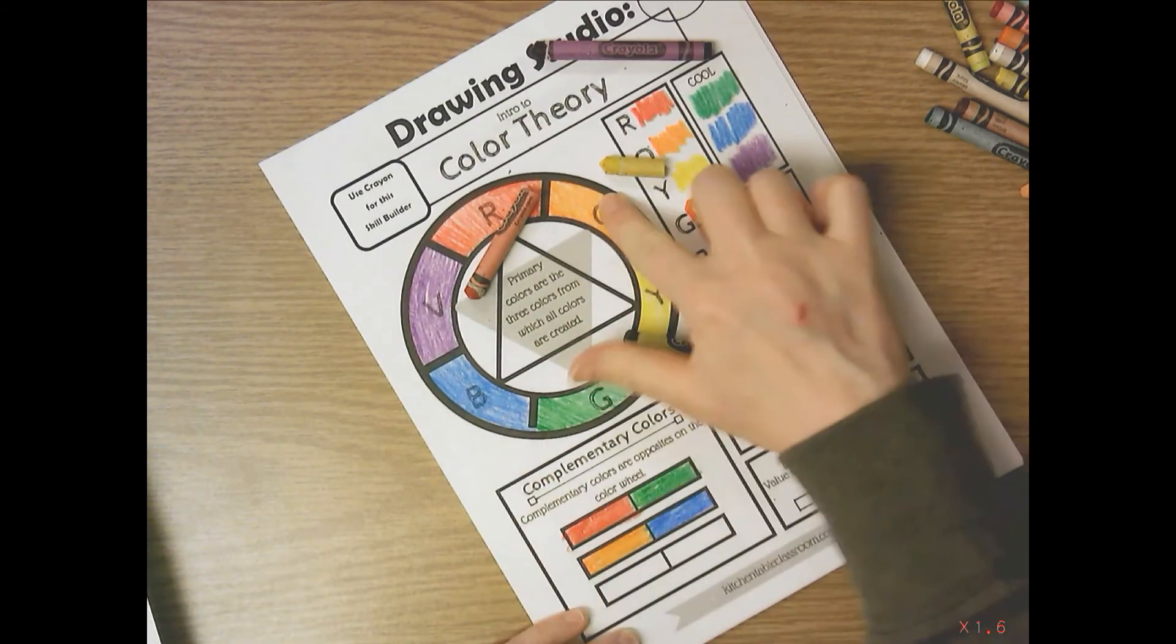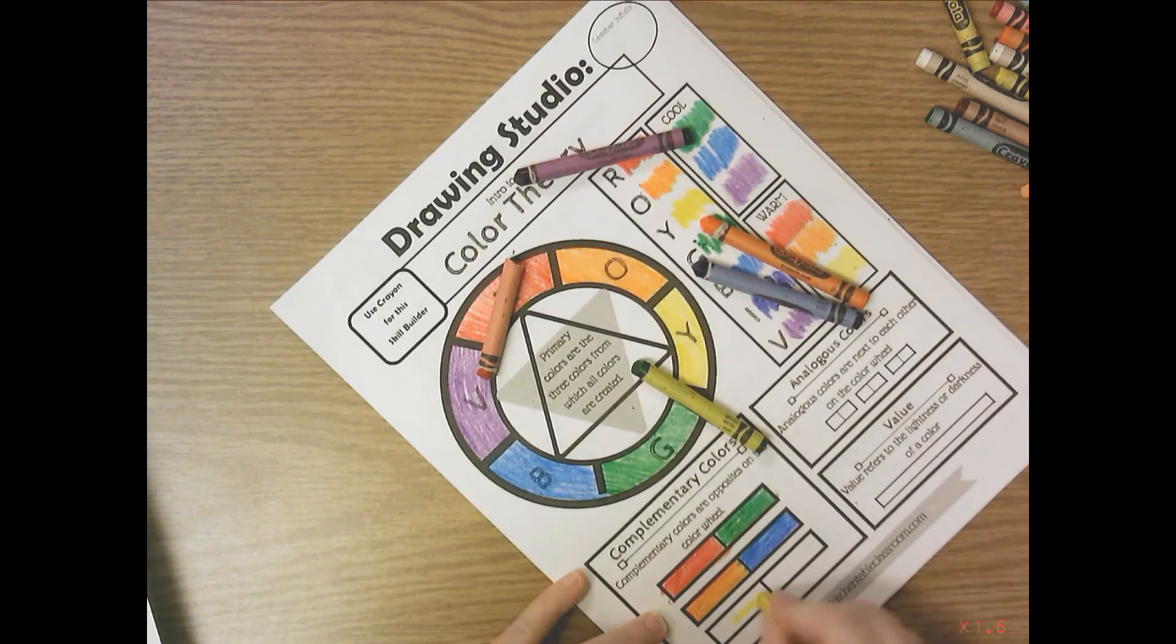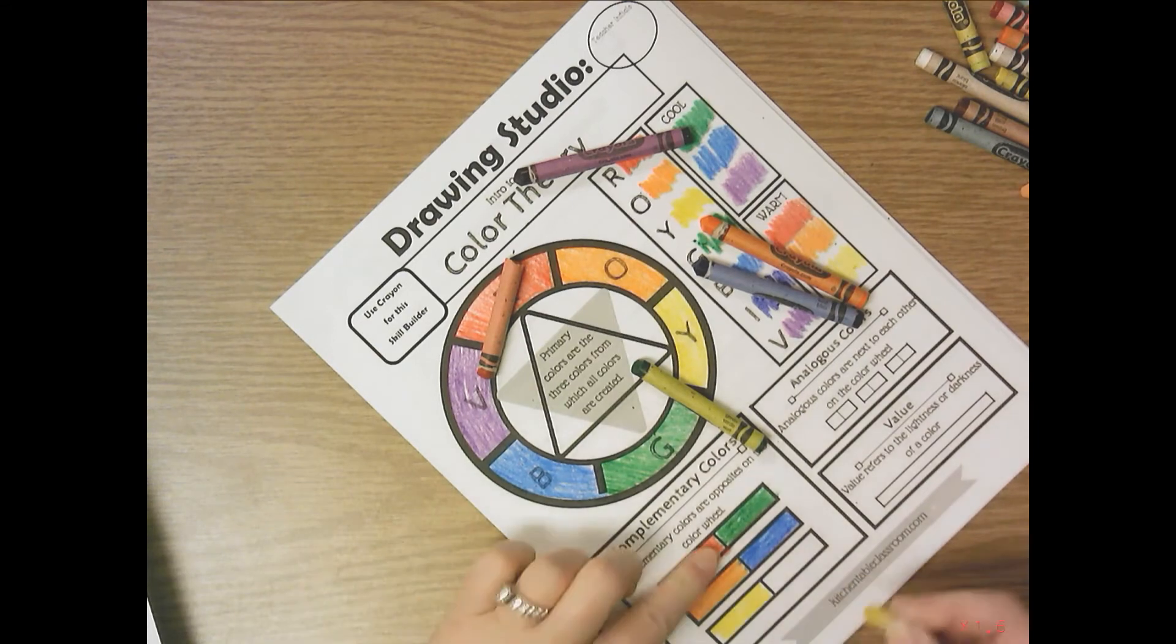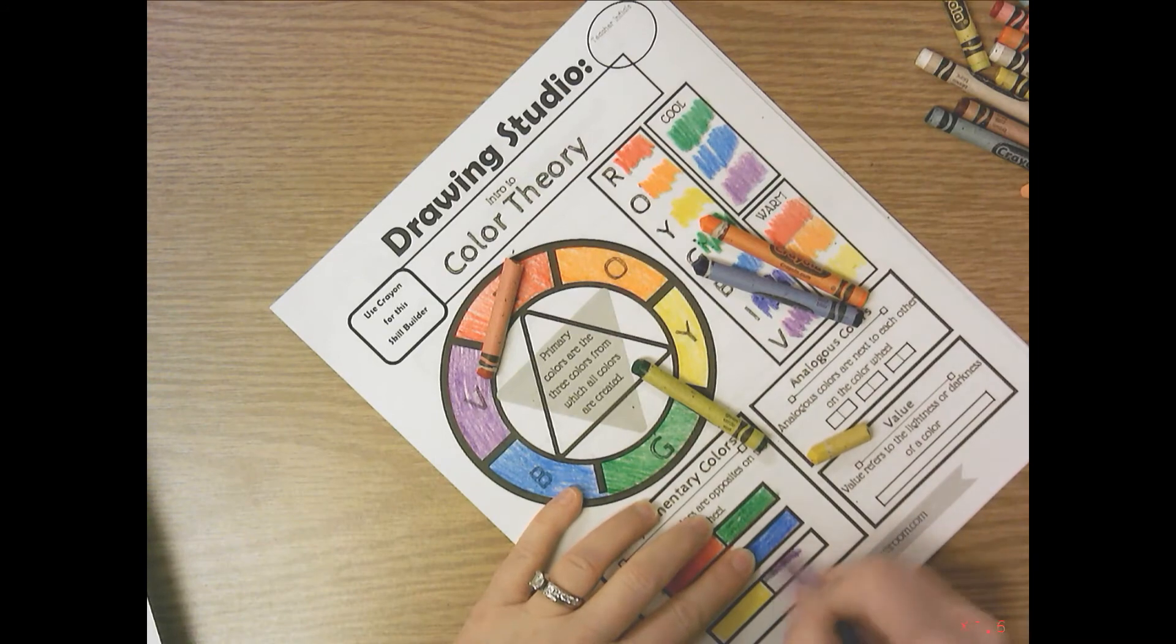So blue and orange are directly across from each other, and then that leaves yellow and violet. You can do these in any order. You do not have to do the first section red and green and the second section blue and orange like I did. You can do yellow and violet first if you like.